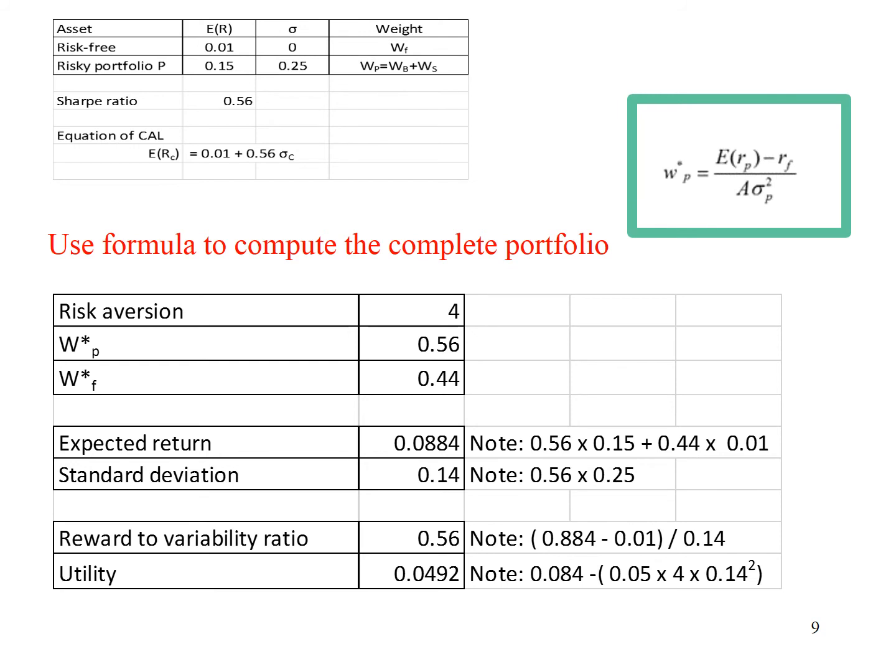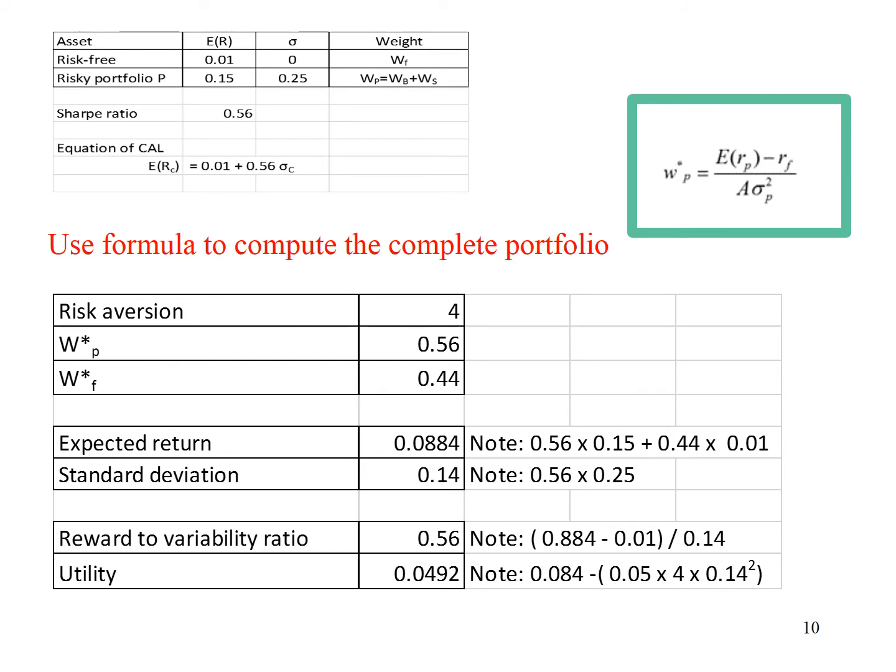You can check your final answer from the working shown in the slide. You may also calculate reward to variability ratio, which is the Sharpe ratio, as well as the utility from the investment. The Sharpe ratio and utility value is calculated using the expected return and standard deviation of the complete portfolio. Do you notice that the Sharpe ratio is the same as the original capital allocation line, which is 0.56? Do you also notice that the utility value is the same as the utility of the indifference curve that is tangent to the capital allocation line, which is 0.0492? Given the capital allocation line, the complete portfolio maximizes the utility of investor based on the highest attainable indifference curve.